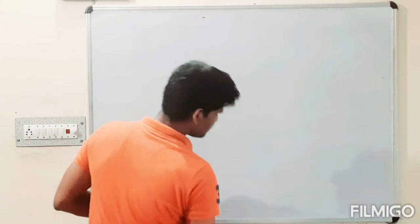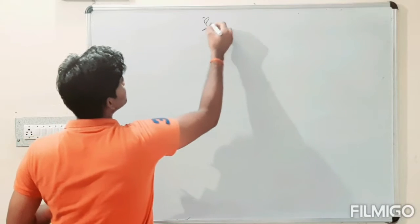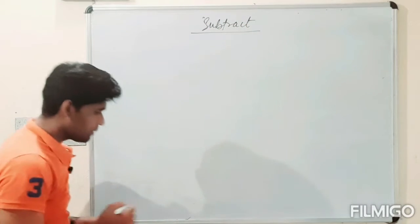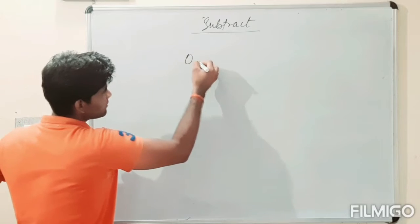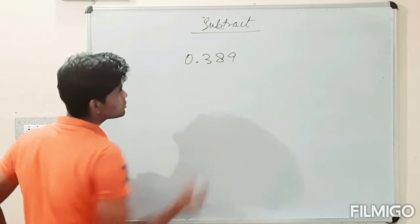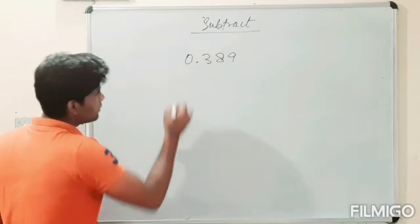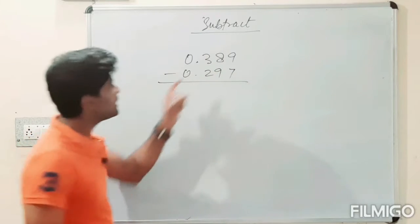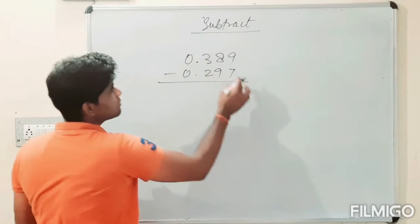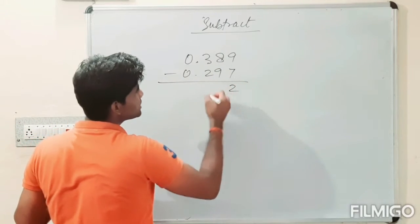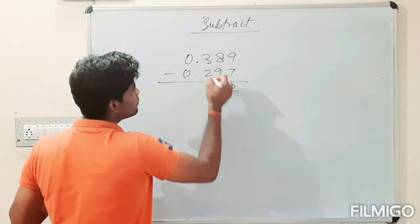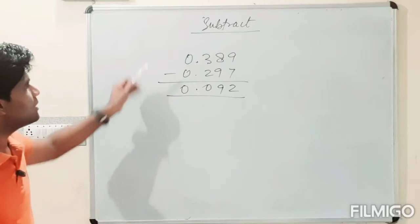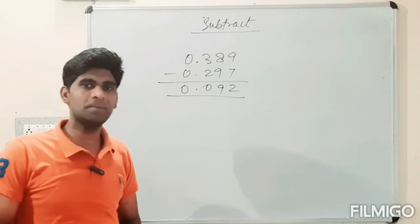Now, how will you subtract the decimals? The subtraction of decimals. Take an example. We have 0.389. We need to subtract the other number 0.297 from 0.389. This is the subtraction of these two numbers. So look, it is very easy.